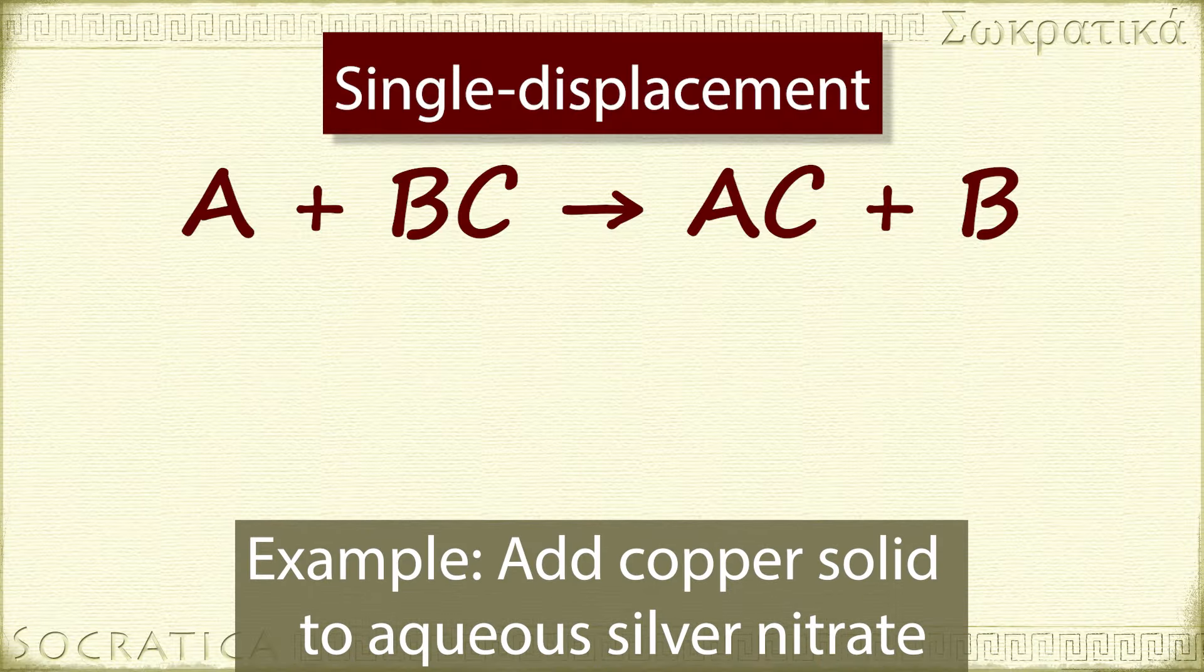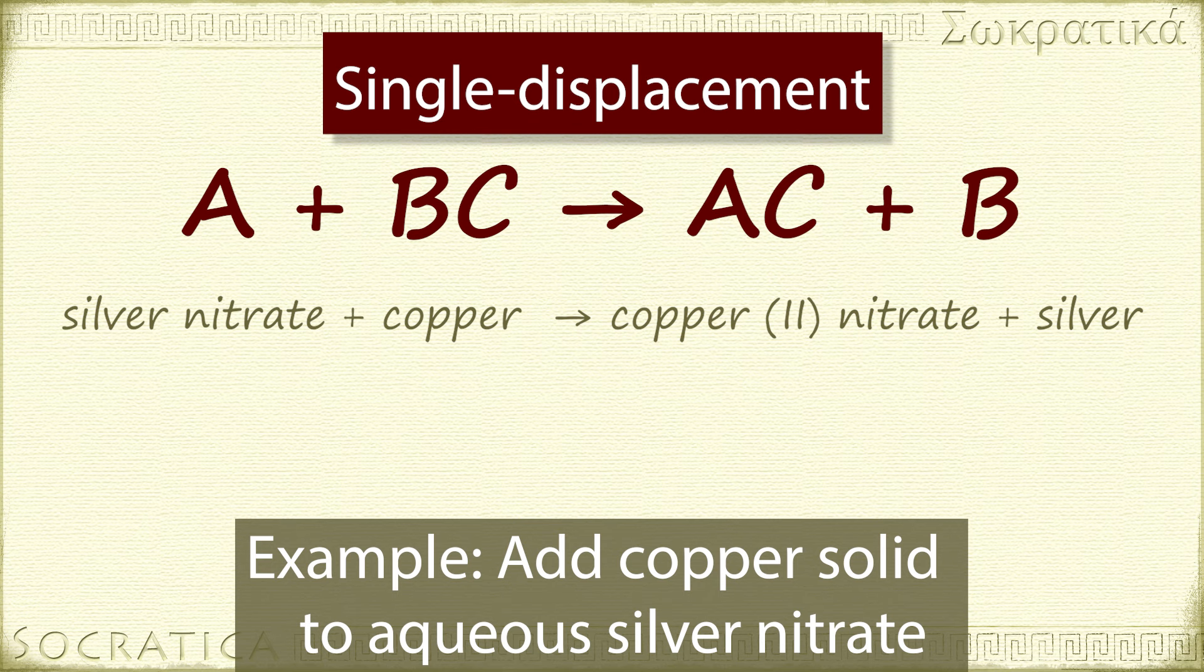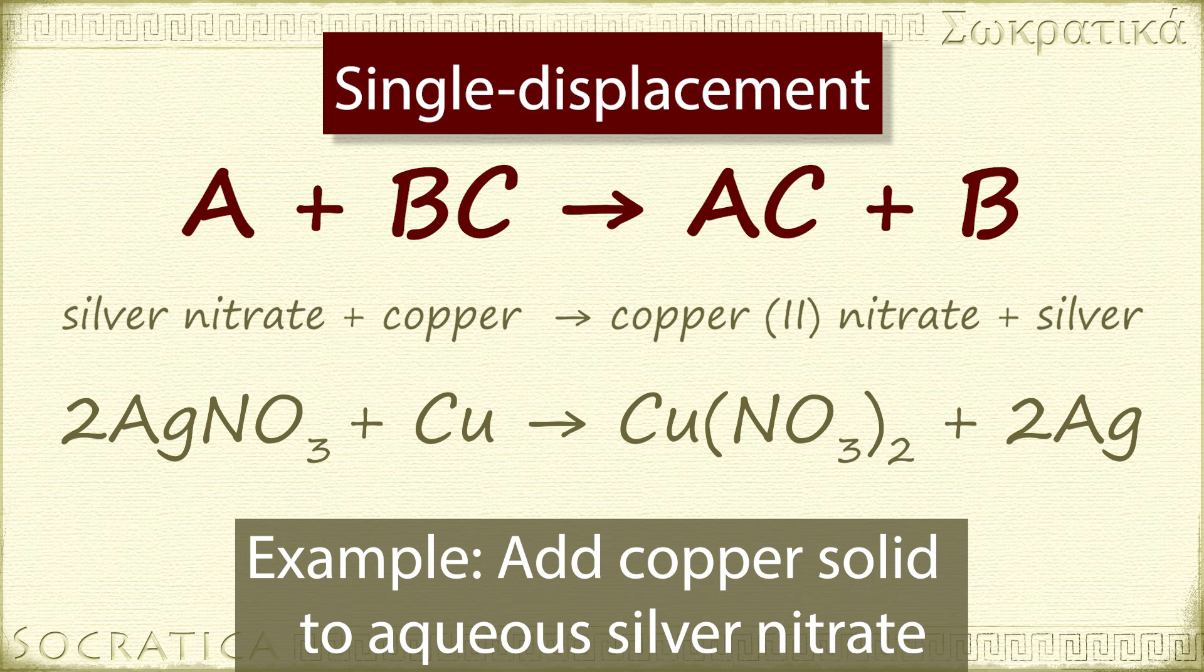So, for instance, if you put a piece of copper into a solution of silver nitrate, over the course of a few hours, the copper and silver swap places. The balanced chemical equation is 2AgNO3 plus Cu yields Cu(NO3)2 plus 2Ag.